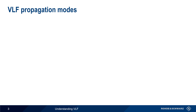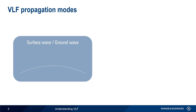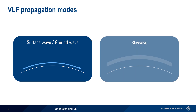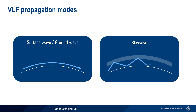Like many other types of lower-frequency signals, VLF can propagate either by surface wave, also commonly called ground wave, or by sky wave. Let's spend a few minutes taking a closer look at both of these propagation modes, starting with surface wave.